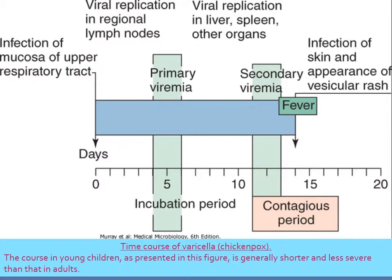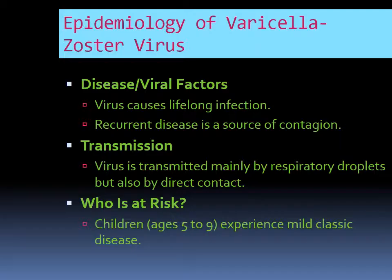Before we started vaccination for chicken pox, mothers — you can ask your grandmother — women used to say that all of their children had chicken pox. The idea was they would have it once in a lifetime and have lifelong immunity. But there are some problems I'm going to talk about today. Epidemiology: virus causes lifelong infection or lifelong immunity. Recurrent disease comes. Transmission could be respiratory. The at-risk age group is five to nine. These days, we don't wait for kids to have a natural infection of chicken pox — we give them a vaccine.